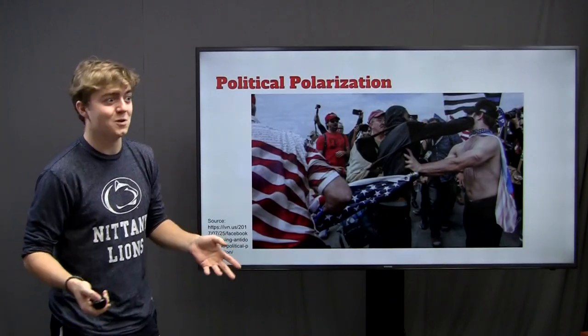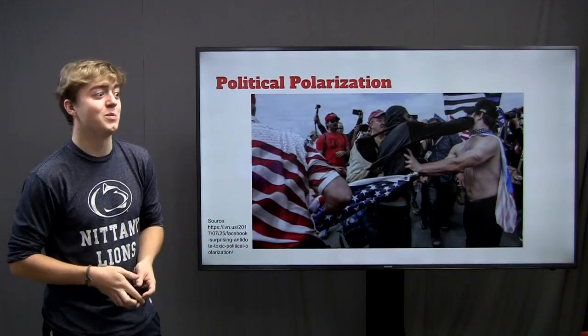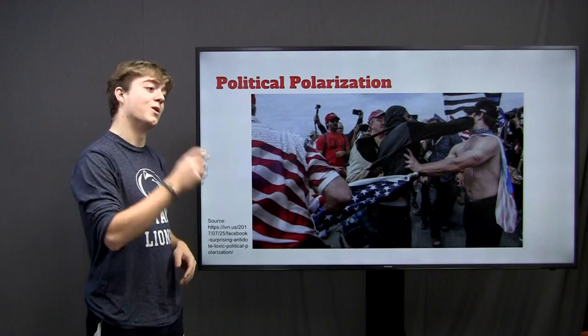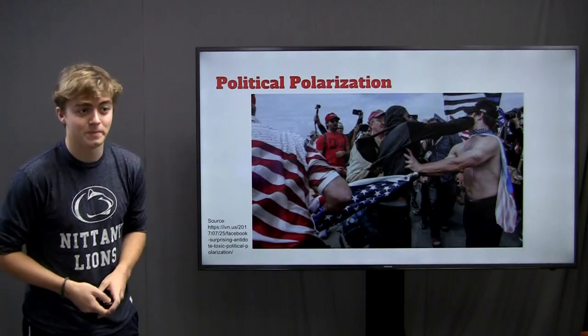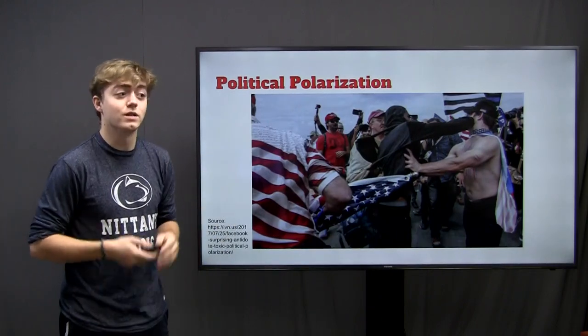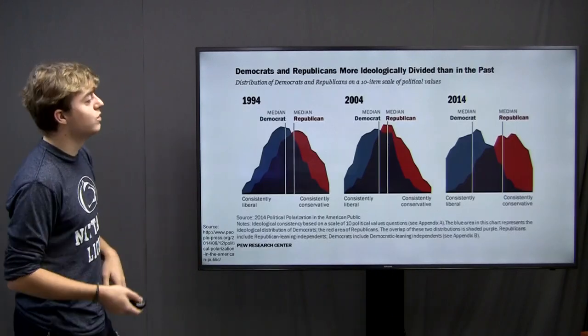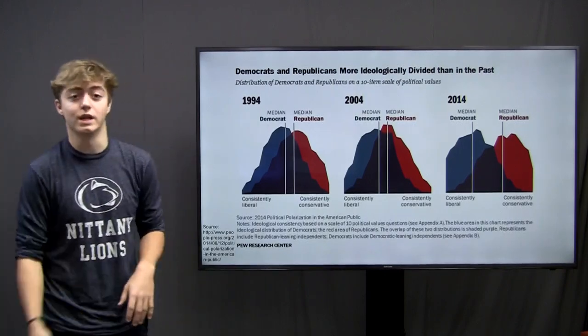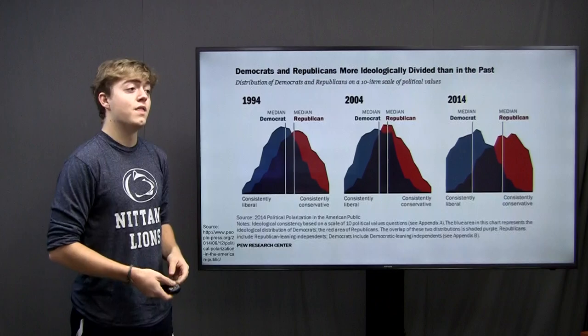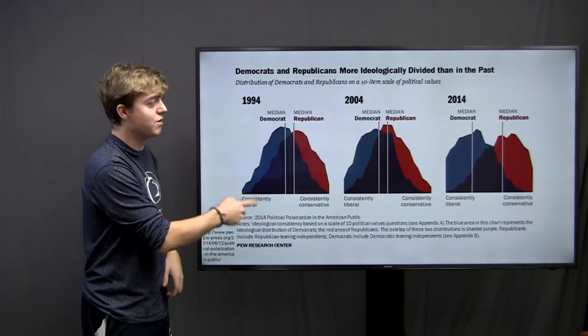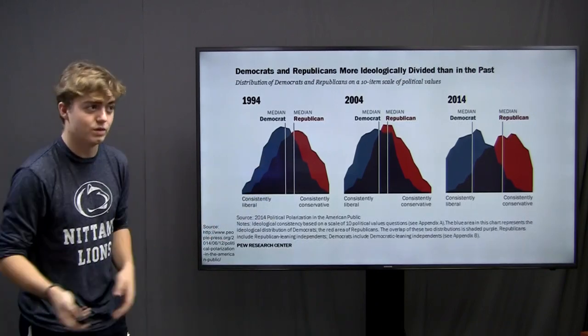One of the most pervasive issues within the world of politics today is polarization. As you probably know from your recent Thanksgiving dinner, you could sit down at any table and see a split 50-50 down the line of people who are on the left and people who are on the right. But we don't have to look at just anecdotal evidence — if we look at data showing the issues that both Democrats and Republicans are ideologically aligned on, over the last 20 years that number has decreased exponentially, as you can see from 1994 to 2014.